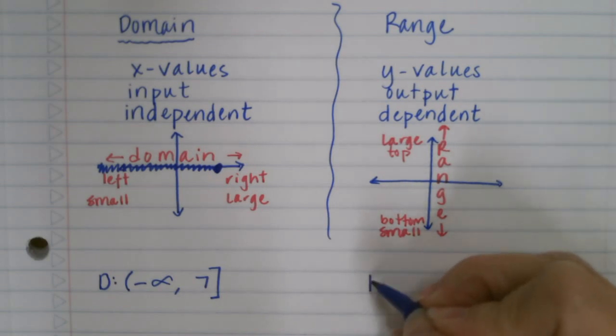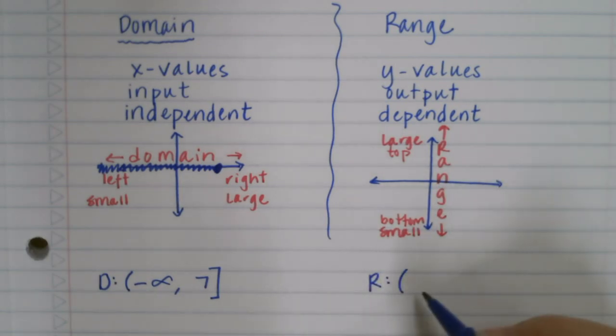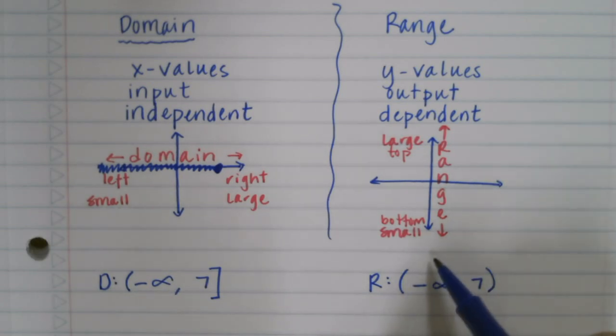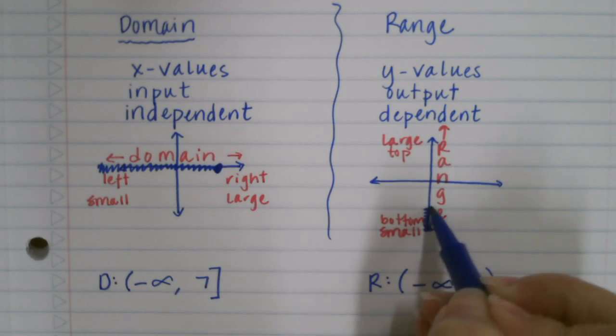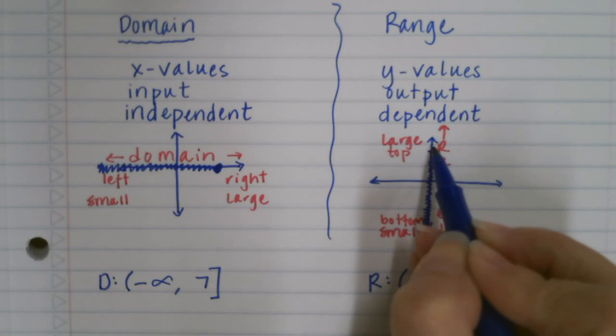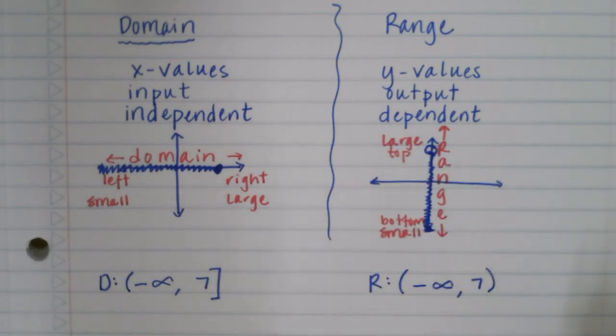If we had a range of negative infinity to 7 with parentheses, in this case we're talking about the y values. So we're going way down here and we're coming up all the way up to 7, but then it's going to be an open dot on the 7, because the parentheses means that it goes up to 7 but doesn't include it. It doesn't equal the 7.